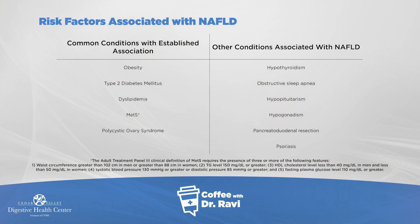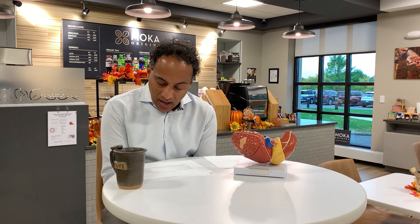There are some risk factors associated with fatty liver, including common conditions such as obesity, diabetes, and high cholesterol. There's a condition called metabolic syndrome, where one needs to have three or more of these features: waist circumference greater than 102 cm in men or 88 cm in women; blood triglycerides greater than 150; HDL cholesterol less than 40 in men and less than 50 in women; and the higher blood pressure reading greater than 130. Having three or more of these puts one into metabolic syndrome, which predisposes to fatty liver.